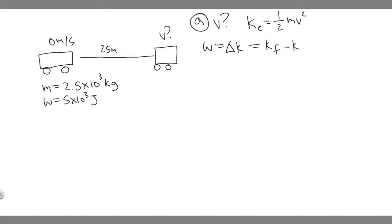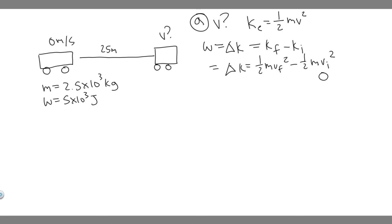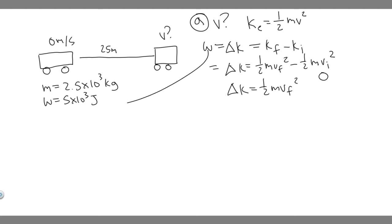So the change in kinetic energy is one-half MV_final squared minus one-half MV_initial squared. The initial velocity is 0, so that entire term becomes 0. The change in kinetic energy is just equal to one-half MV_final squared. And since work equals change in kinetic energy, and we know the work is 5 times 10 to the 3, that's 5,000 joules.